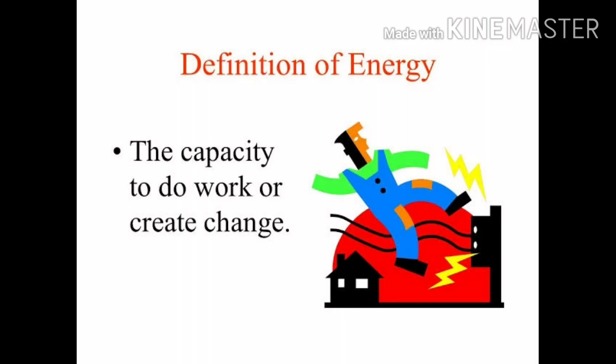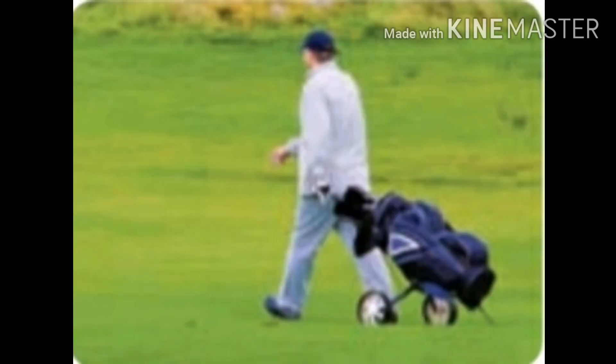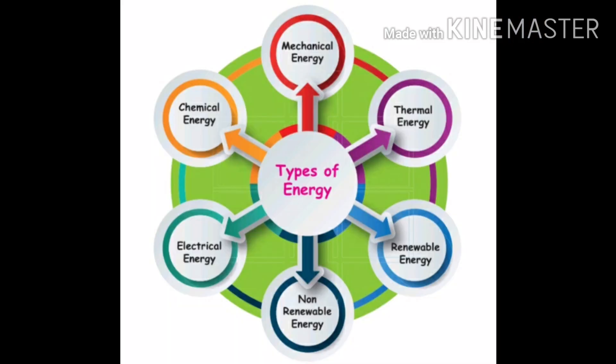Energy is defined as the capacity for doing work. Energy must be transferred to an object in order to do work. A man pulls luggage — to do so he needs some energy. The source here is food, which gives energy to humans. The car moves by receiving energy from the burning of fuel — the source is fuel. The escalator moves by using electricity as energy — the source is electricity.